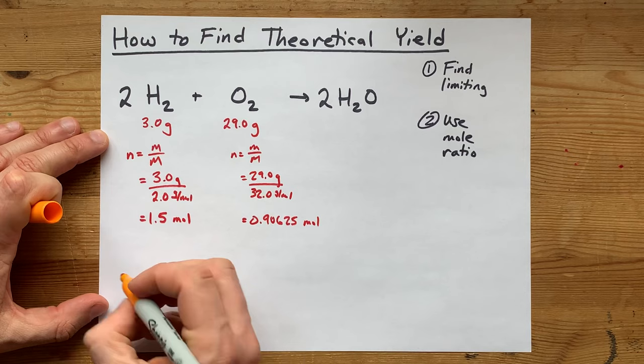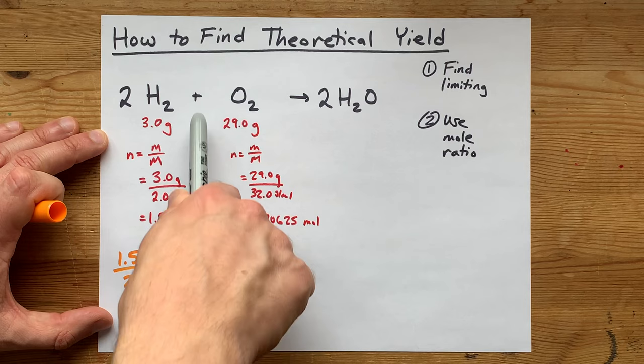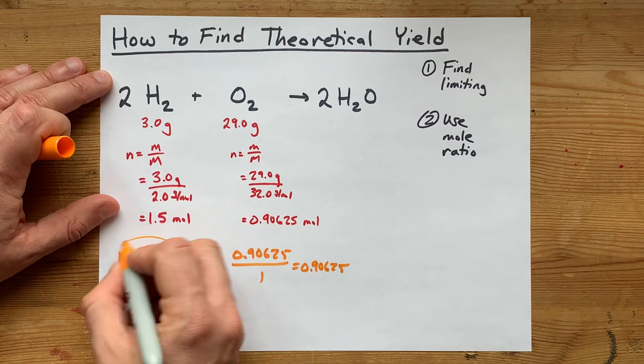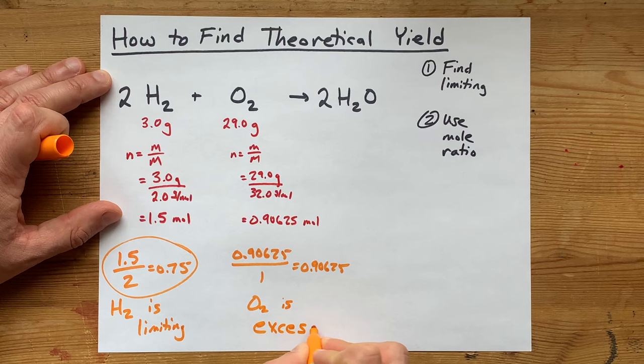My trick to find limiting reactant is to take this number of moles—each number of moles, I should say—and divide them by the coefficient of the balanced chemical equation. Two for here and one for here. Of these two numbers, the smaller one corresponds to the actual limiting reactant. That's this one. So H2 is my limiting reactant here, and O2 is not limiting. The word we have for that is excess.